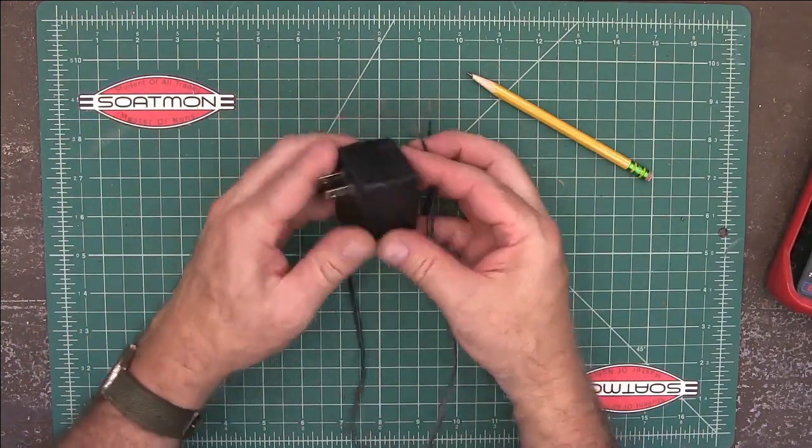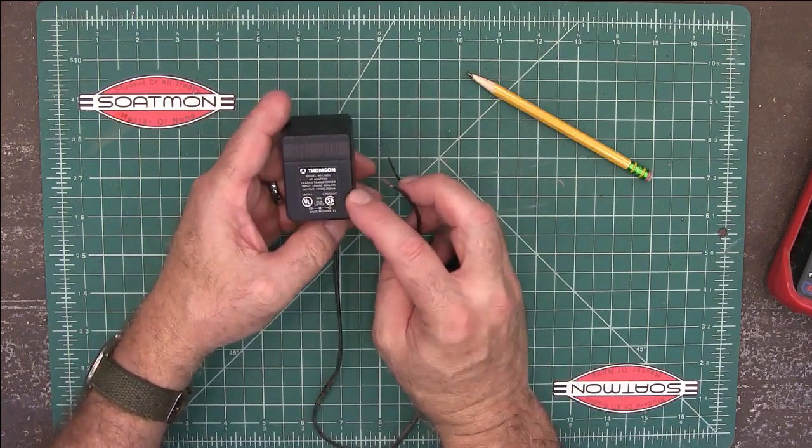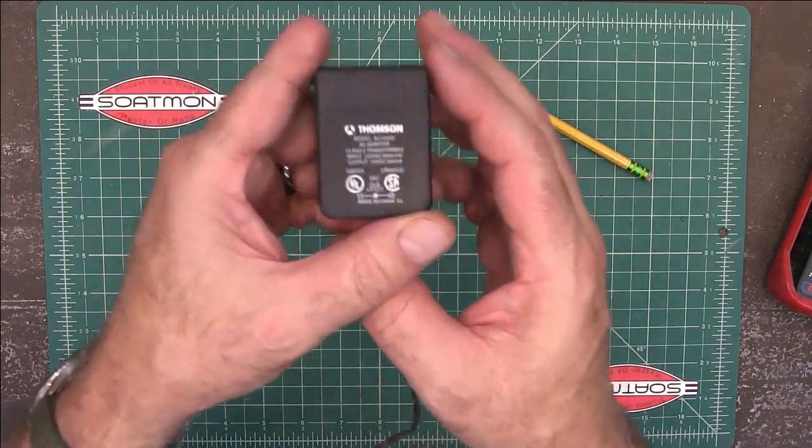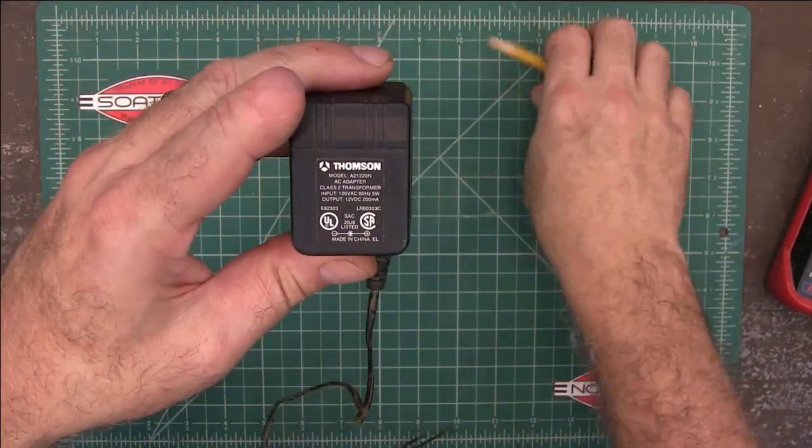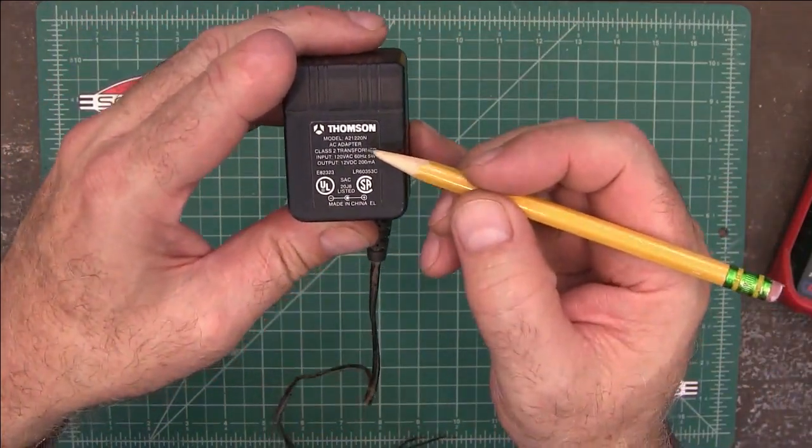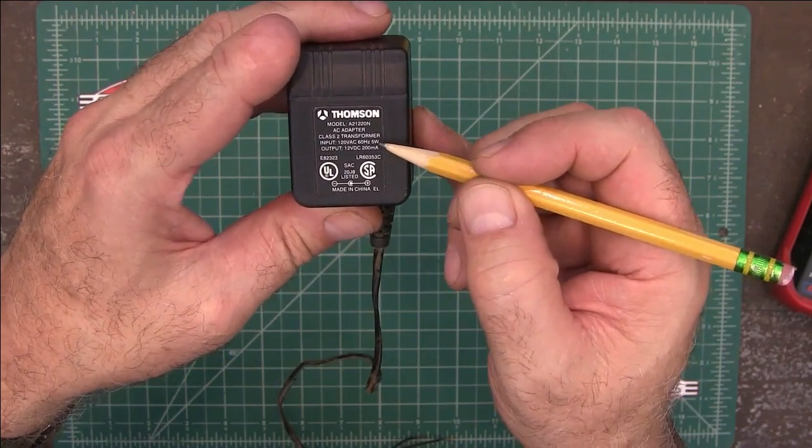And this one, this is a different one. Every transformer you find is going to tell you what it is on it. So I'm showing you these because the lettering is clear. A lot of times, it's just kind of printed in black on there and kind of hard to see. But this one is 120 volts.